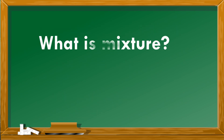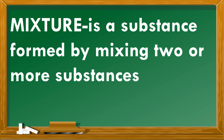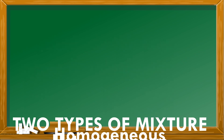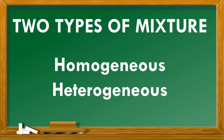Did you learn something? Can you tell us now what is a mixture? A mixture is a substance formed by mixing two or more substances together. What are the two types of mixture? The two types of mixture are homogeneous and heterogeneous mixture.